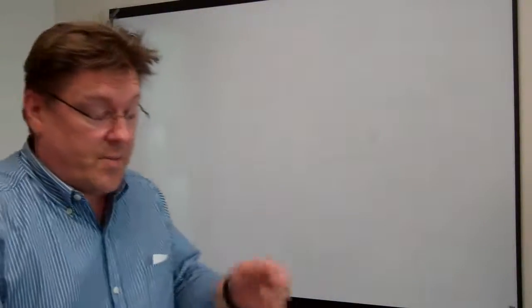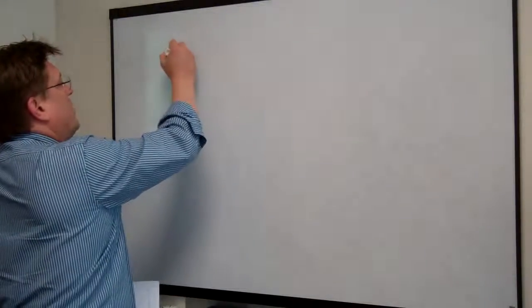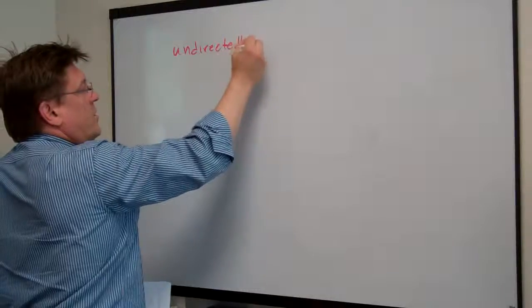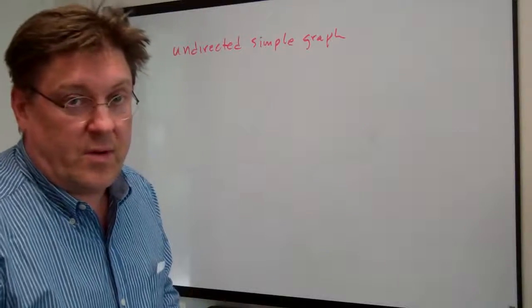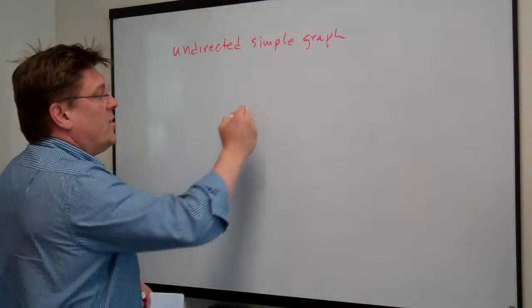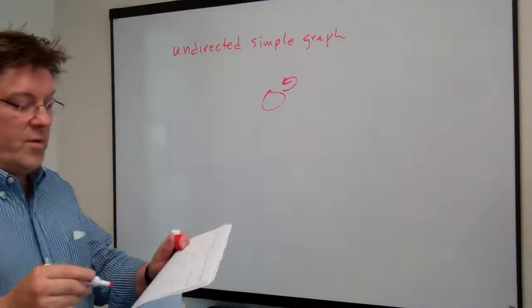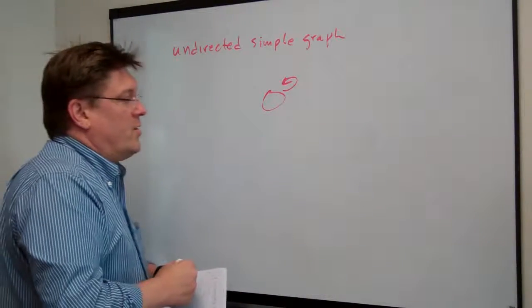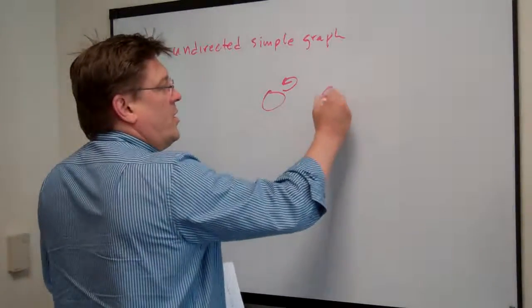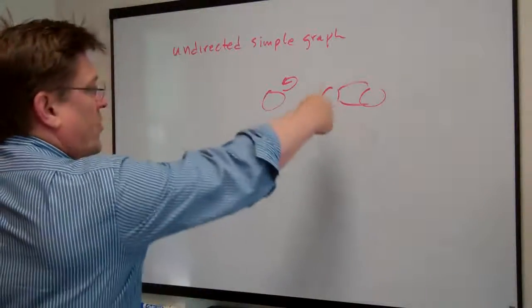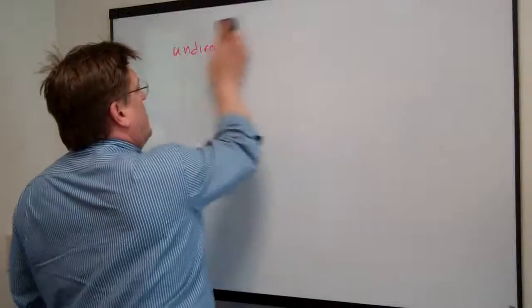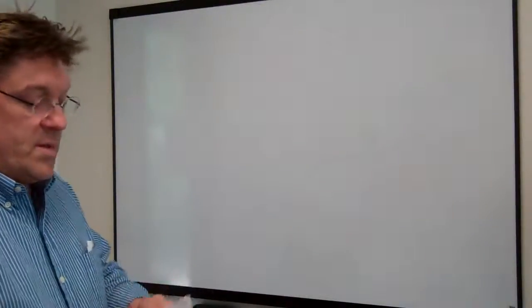Now let's look at the next concept: the graph. We're working with an undirected simple graph. The problem doesn't necessarily state that clearly, but it has to be in there. So there are no arrows, no self-loops, and no multi-edges in the graph.